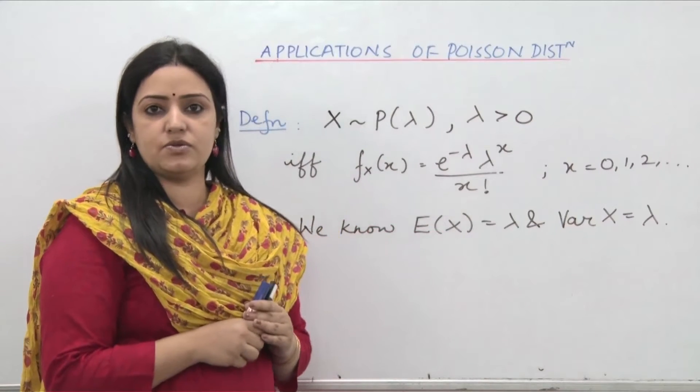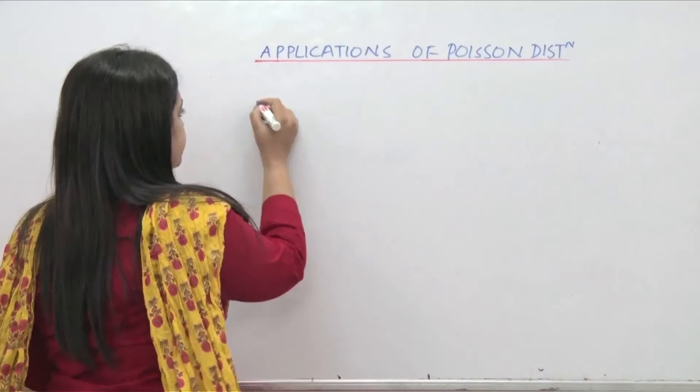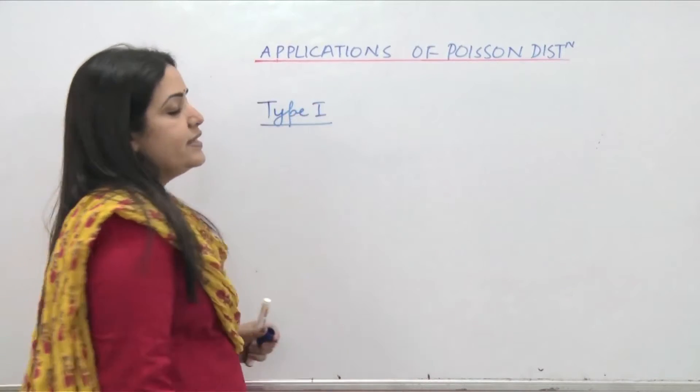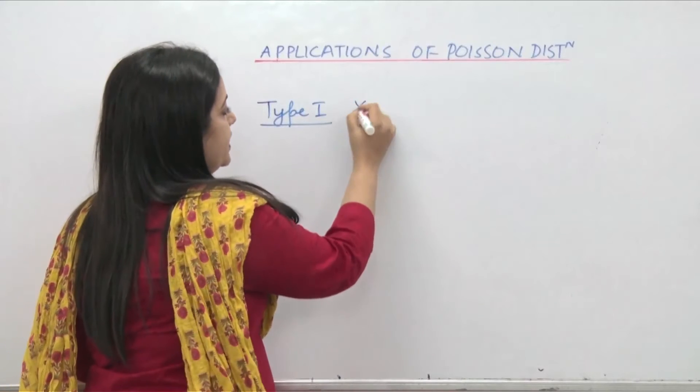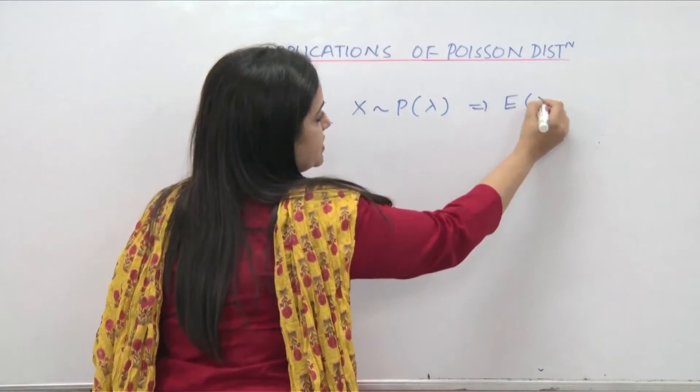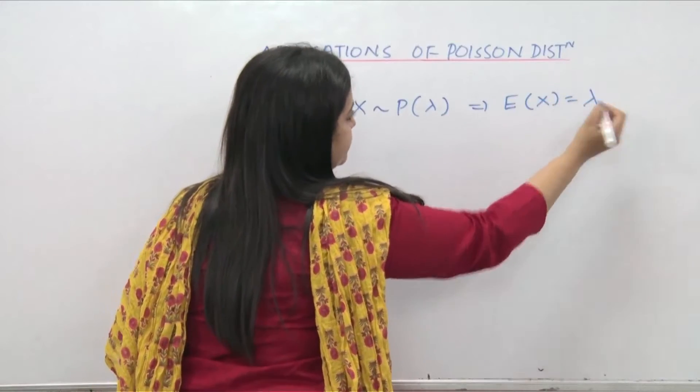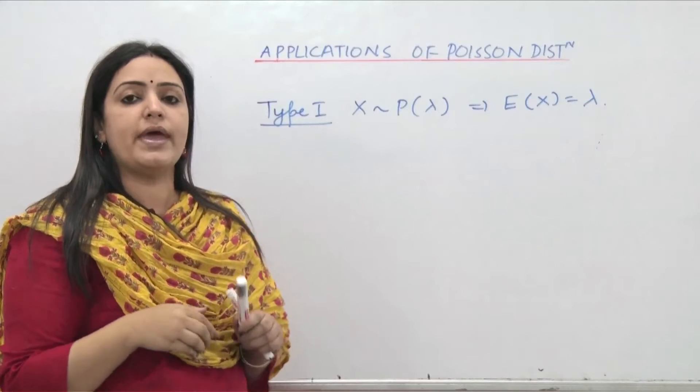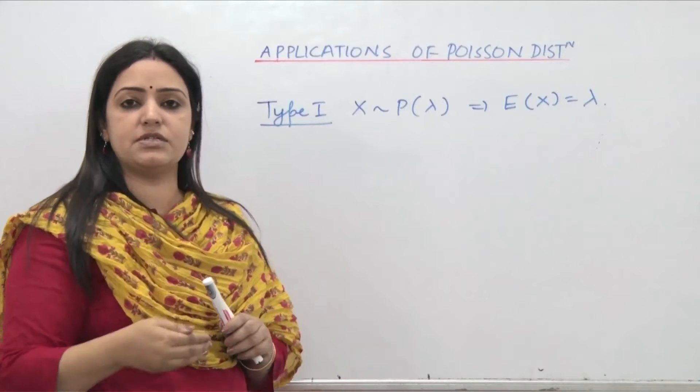There are two applications of Poisson distribution. Type 1 application depends on the fact that if x follows Poisson with parameter lambda, then expectation of x also comes out to be equal to lambda. So we use it in those situations where average number of some things is provided to us.